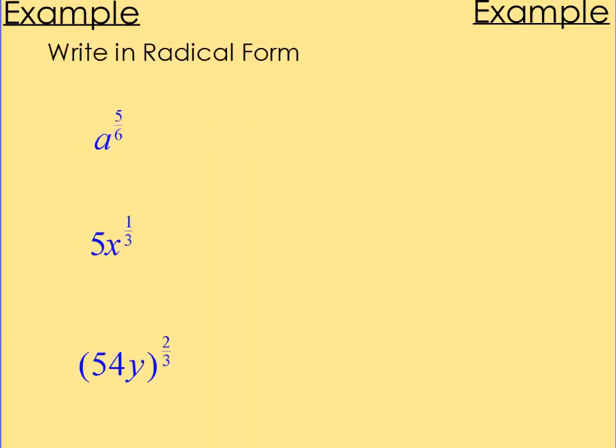Alright, next ones. Pause the video. Okay, I want to write these in radical form here. So we've got them in exponential, write in radical. This one's going to be the sixth root of a to the fifth power. This next one here, notice x to the 1 third power and the 5 separate. So this is going to be a 5 on the outside. Don't be tricked by that. It's not 5 to the 1 third power as well. 5 times the cube root of x. This last one, since it's in parentheses, this 2 thirds power is going to be for the 54 and the y. So I can write this as the cube root of, in parentheses, 54y squared. I can leave it just like that.